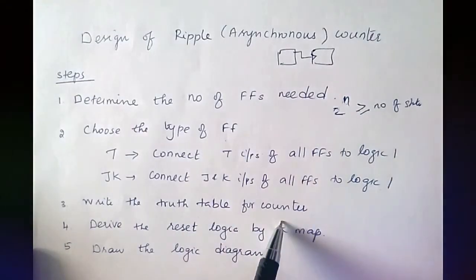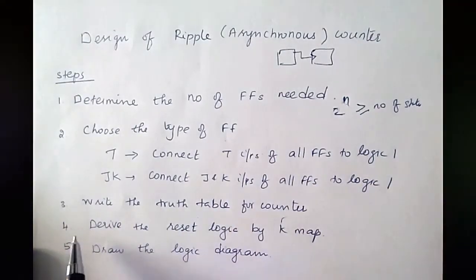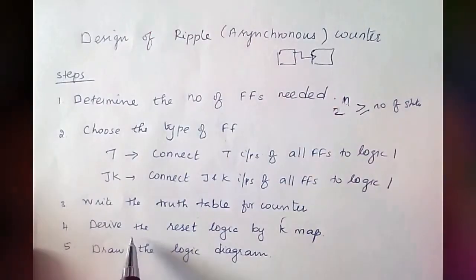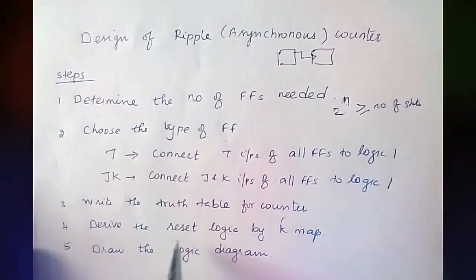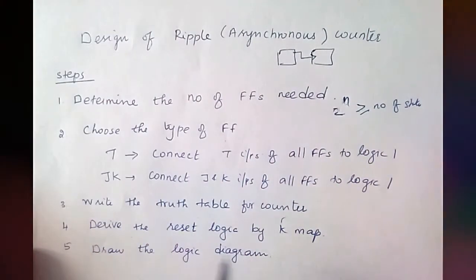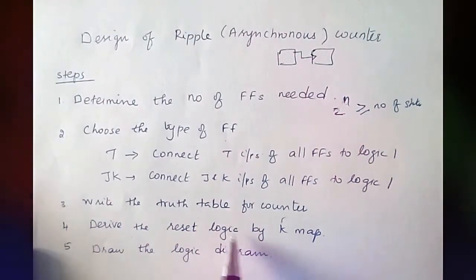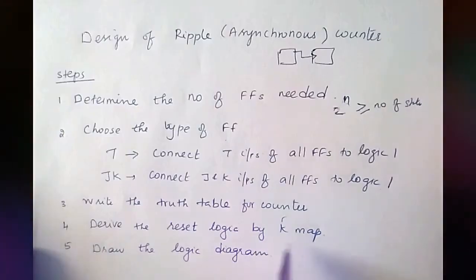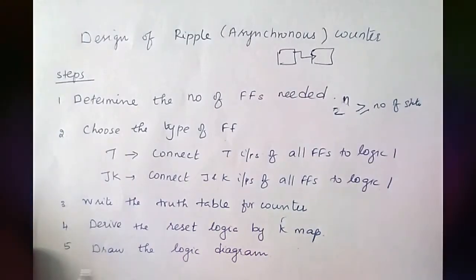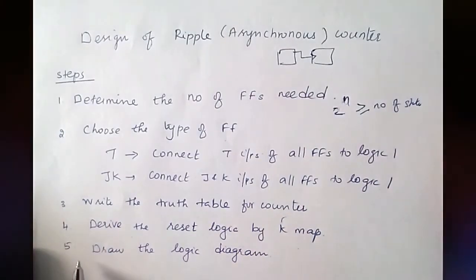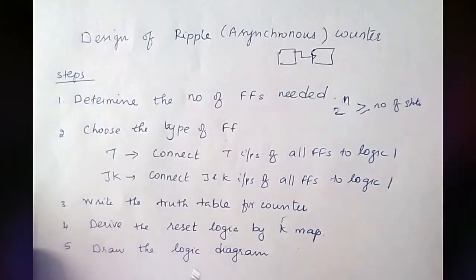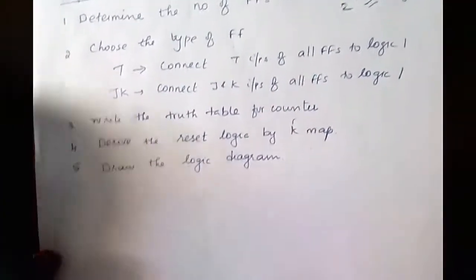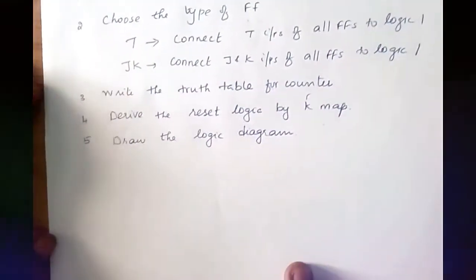The third step is to write the truth table for the counter, and the fourth step is to derive the reset logic using the K-map. The last step is to draw the logic diagram.